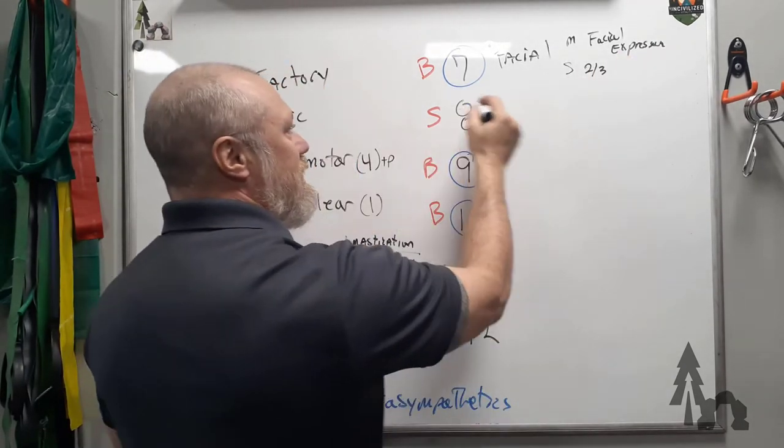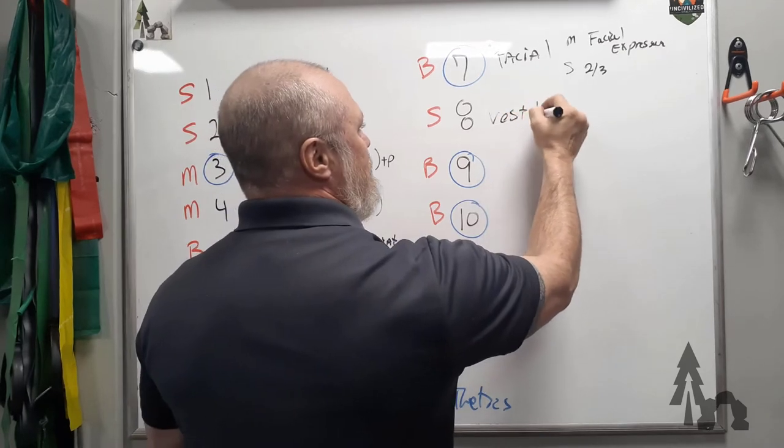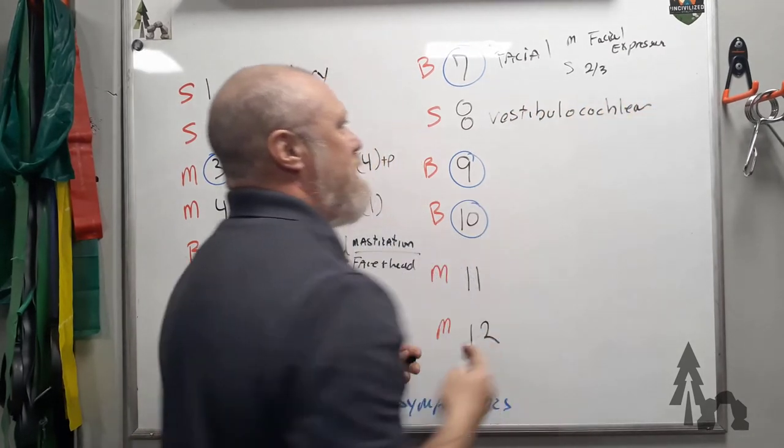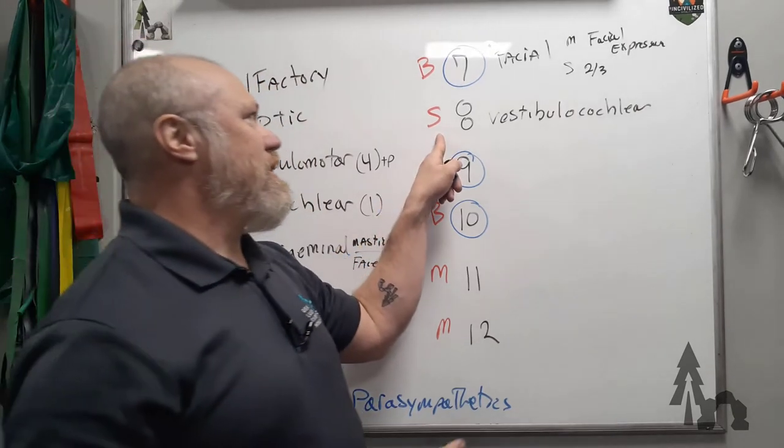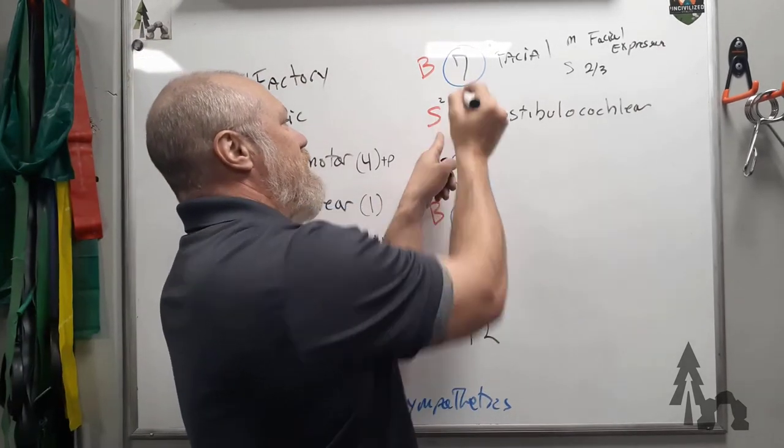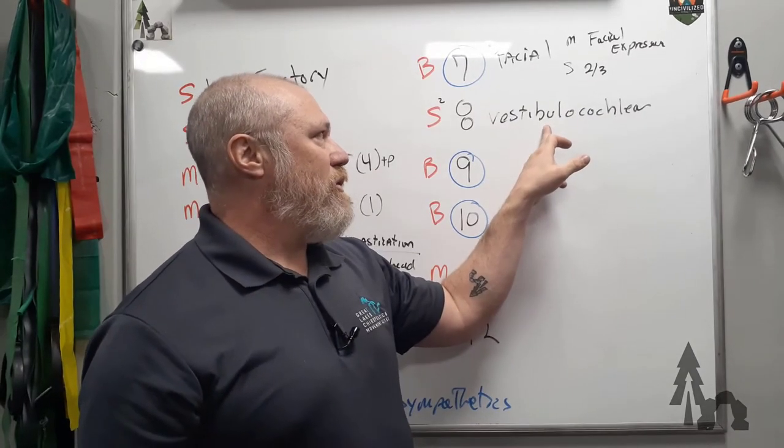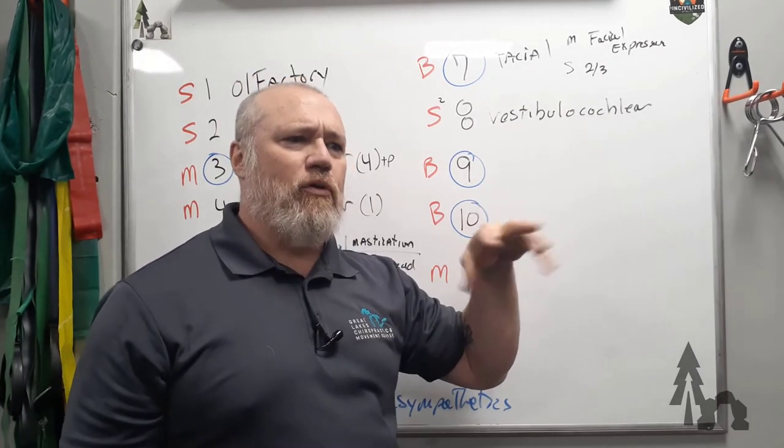Eight is the vestibulocochlear. This is going to be two senses, actually. The vestibulo apparatus—the vestibule is a little structure in your inner ear that has the utricle, saccule, and the three semicircular canals for linear acceleration, movement of gravity, and then orthogonal movement.